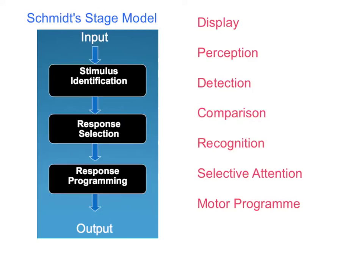Here we have Schmidt's stage model. This is the only model that we need to know for the exam. It's a basic information processing model and you can see here that it has three stages of decision making. The first part of Schmidt's model that we're going to look at is the input aspect of our decision making or our information processing.